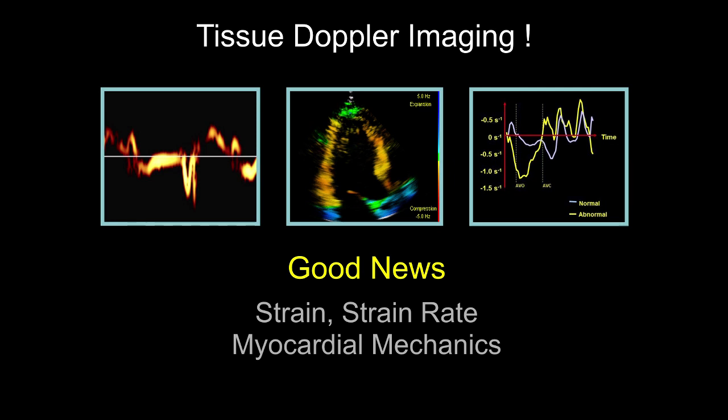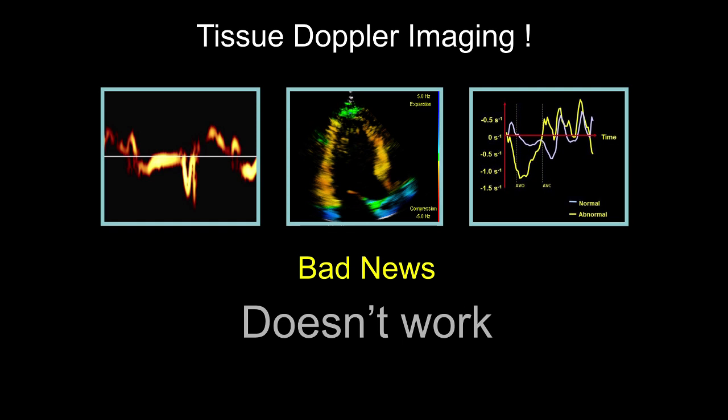The bad news is tissue Doppler doesn't work well. It's not really tracking the tissue; you place a sample volume somewhere, and the biggest issue is angle dependency. Another problem is the apical area — the apex plays an important role in many conditions — and that's where the technique of speckle tracking comes into play.